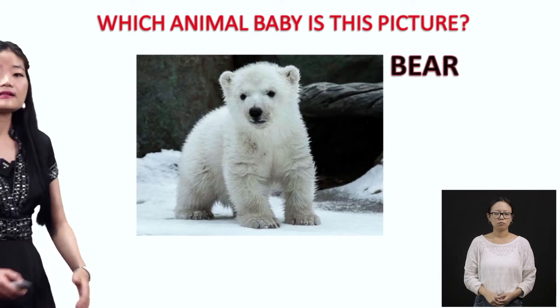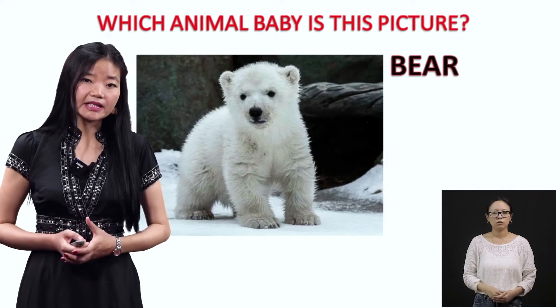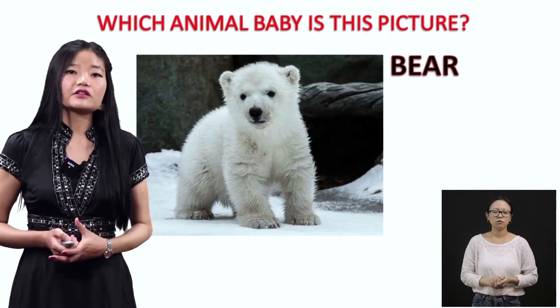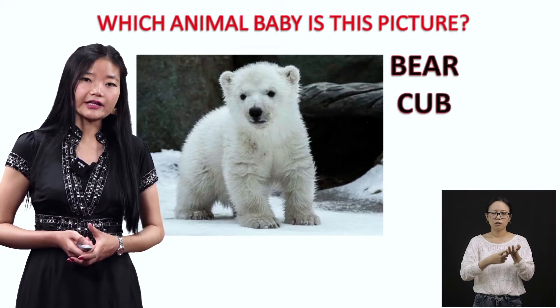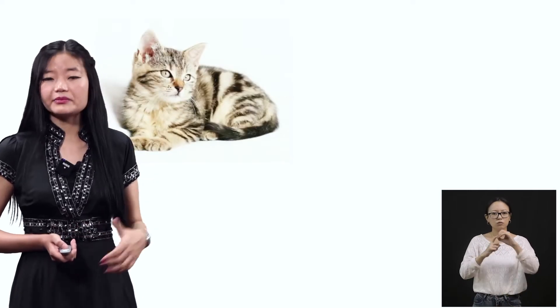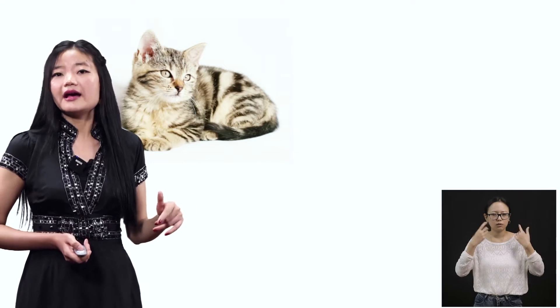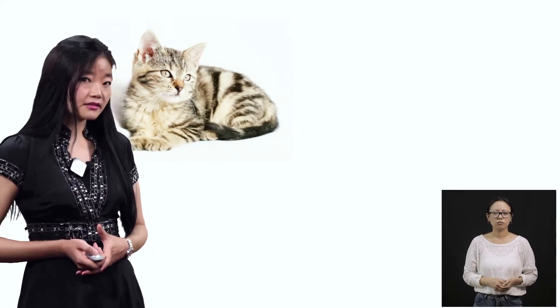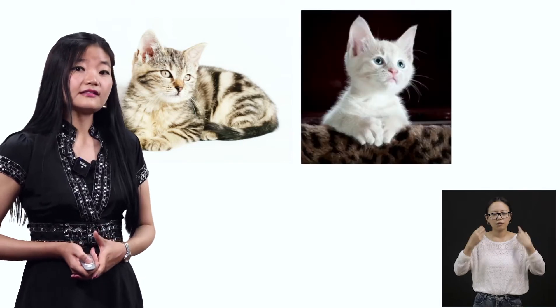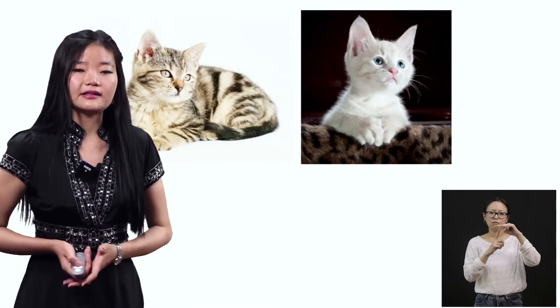This is a baby of a bear — B-E-A-R — and it is called a cub, C-U-B. The next question is about this animal. This is a cat, and the name for a baby cat is kitten — K-I-T-T-E-N.